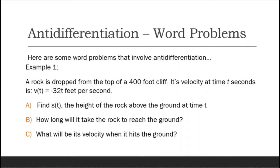Example number one: a rock is dropped from the top of a 400-foot cliff. Its velocity at time t seconds is v(t) = -32t feet per second. Questions: letter a, find s(t) representing the height of the rock above the ground at time t; letter b, how long will it take the rock to reach the ground; and letter c, what will be its velocity when it hits the ground?